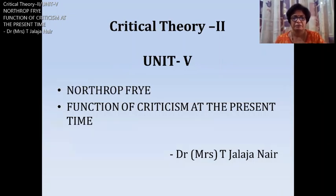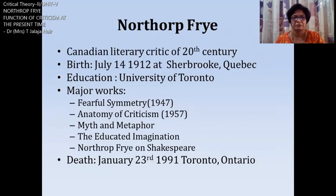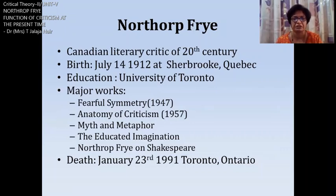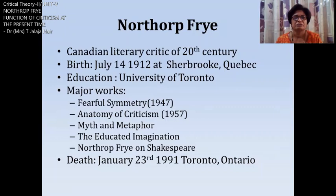The article 'Function of Criticism at the Present Time' was written by Northrop Frye in 1949. He was a great Canadian critic and is best known as one of the most important theorists of the 20th century. He was born in July 1912 at Sherbrooke, Quebec.